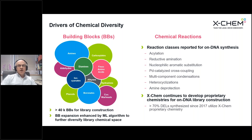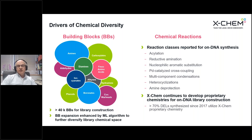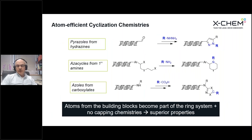The other source of chemical diversity is the chemical reactions we use to assemble these building blocks. There are a wide range of on-DNA synthesis example chemistries reported in the literature, listed on the right-hand side of this slide, but we have made a significant effort over the entirety of the company's history to develop our own proprietary chemistries — chemistries that haven't been reported in the literature for on-DNA applications. We use proprietary chemistries in the vast majority of the libraries we make here at XChem, and in fact, in the last six years, something like three-quarters of the libraries we've synthesized have contained proprietary chemistries.